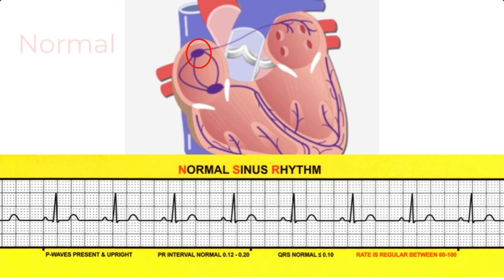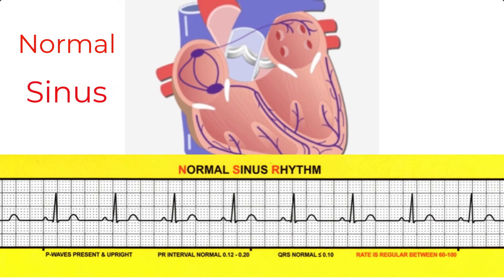The term normal sinus rhythm implies that all the parameters are present without any indication of pathology. When we label something as sinus but don't call it normal sinus rhythm, we are saying we believe the rhythm is still originating in the sinus node, but that something about the rhythm is abnormal.